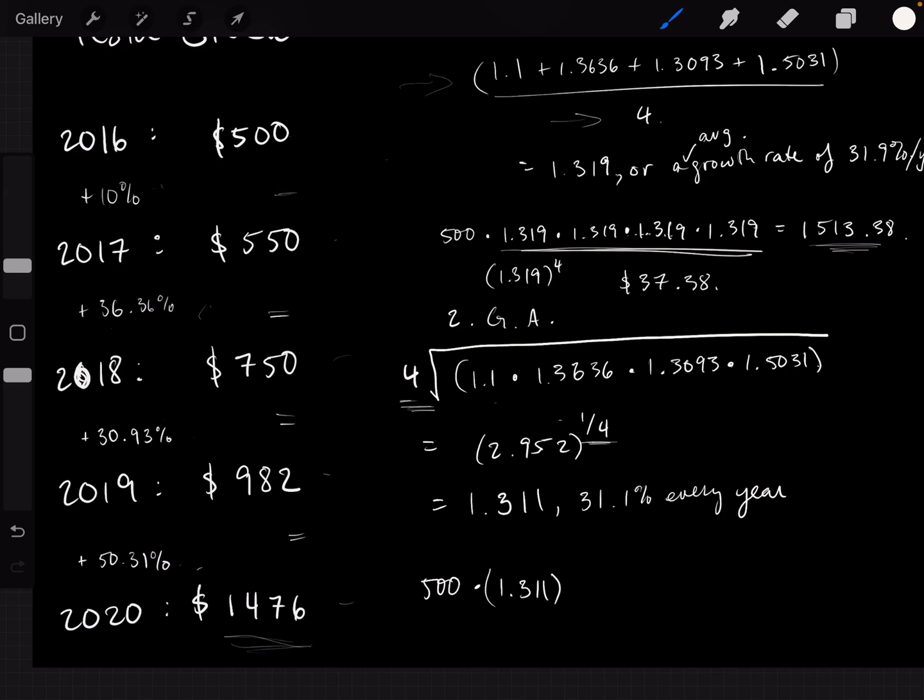So I'm going to do the same thing here, the exact same thing. So what happens to our original value of 500 when we assume that the growth rate, year after year, is 1.311 times 500? We get a final value of 1,475.97. So that's ridiculously close to our actual value in 2020 of the Tesla stock. It's only off by 3 cents.